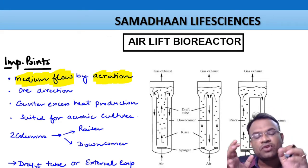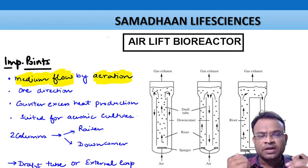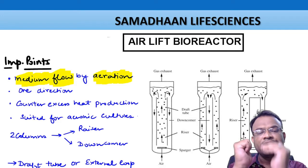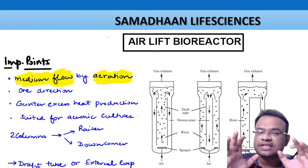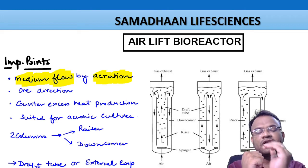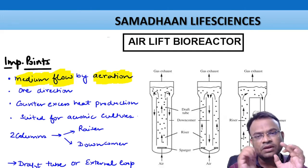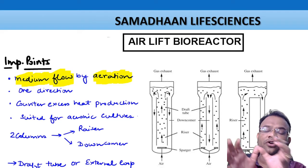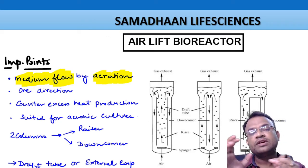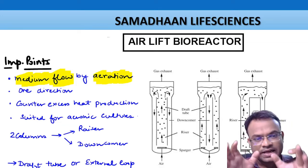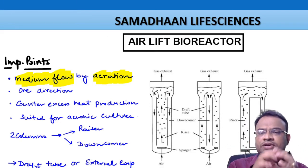Aeration is the process in which we send air into the fermenter through a device called a sparger. The sparger has multiple holes, and through it we send air or oxygen inside the bioreactor. With the help of that air or oxygen only, we cause the medium flow or mixing inside the bioreactor. This is the main salient feature of the airlift bioreactor.